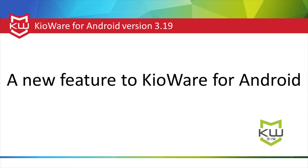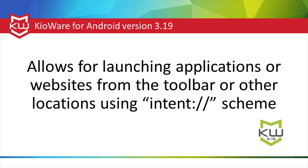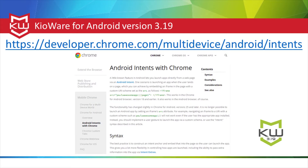A new feature in KeyWare for Android allows for launching applications or websites from the toolbar or other locations using Intent Scheme. This is a Chrome feature outlined online at developer.chrome.com.